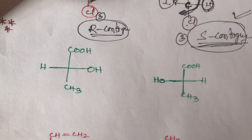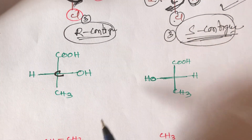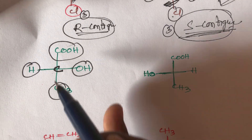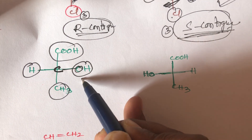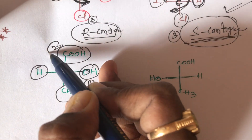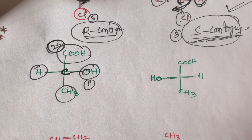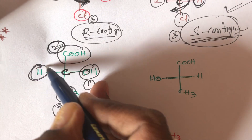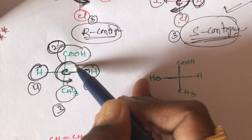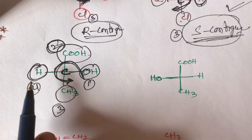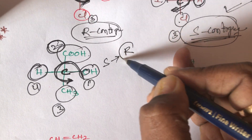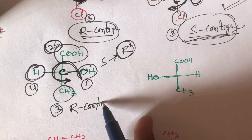Next example: a chiral center with OH, COOH, hydrogen, and methyl groups. First priority goes to OH (carbon directly attached to oxygen). COOH is second (carbon with double bond to oxygen). CH3 is third, and hydrogen is fourth (least priority). Going 1 to 2 to 3 is anti-clockwise. But hydrogen (least priority) is on the horizontal line, so S configuration becomes R. The given structure is R configuration.